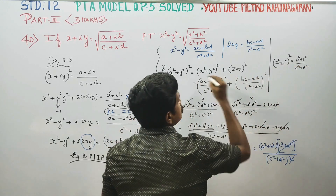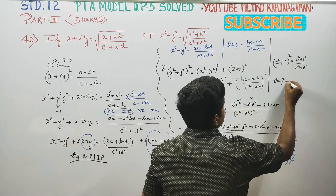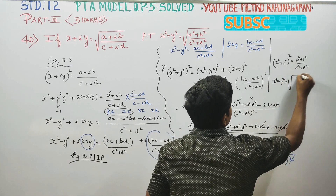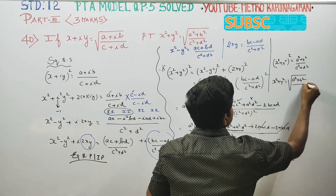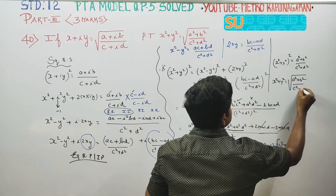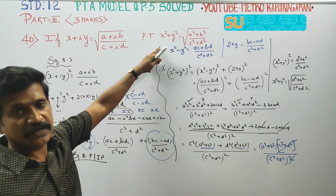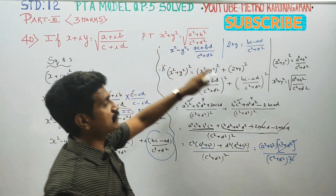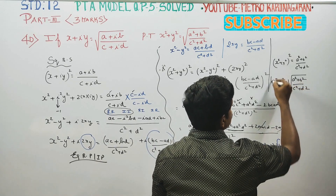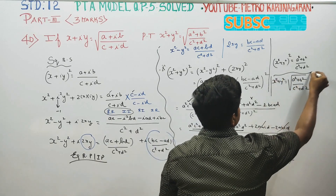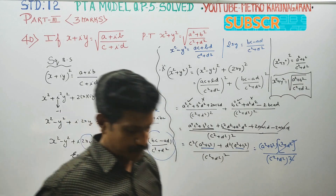Therefore x square plus y square is equal to the square root of a square plus b square by c square plus d square. That is the final result. Thank you.